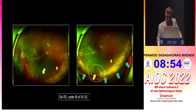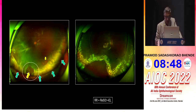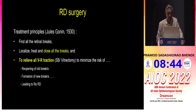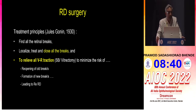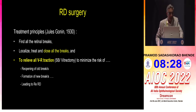And that's exactly what happened in this case. We ultimately cut this retina to settle it down; the patient is doing well after re-silicone oil injection. Basic principles of detachment surgery: finding the breaks, localizing the break, and closing the breaks. What is important is you need to relieve all the vitrectomy traction, so that reopening of old breaks or formation of new breaks can be minimized.